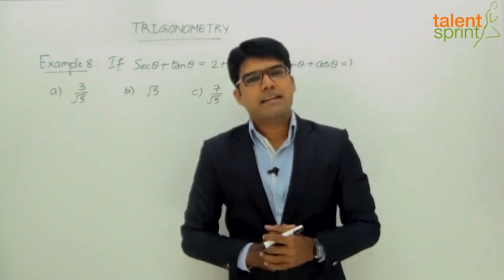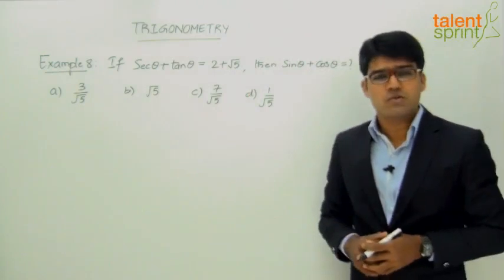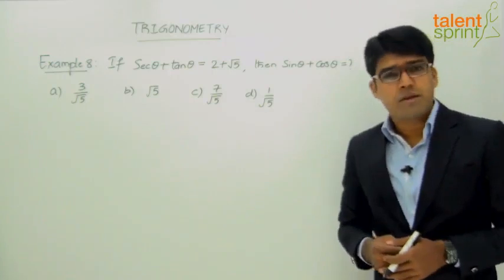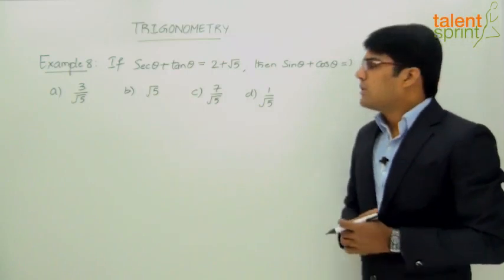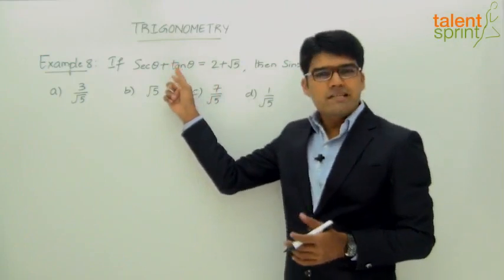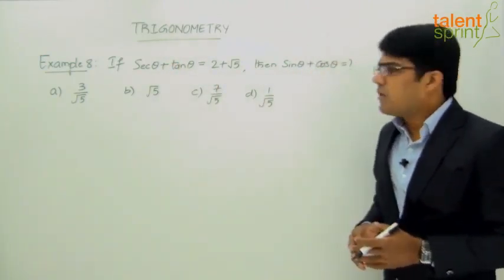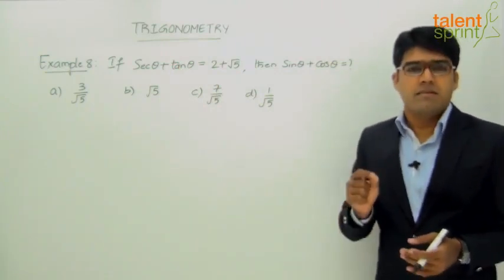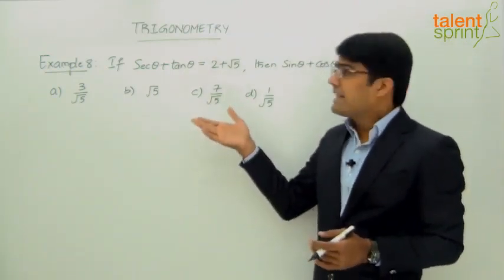Let us now look at example number 8. The question says: if secant theta plus tan theta equals 2 plus root 5, then sine theta plus cos theta equals what? The answer options are 3 by root 5, root 5, 7 by root 5, and 1 by root 5. We have already solved such types of questions where one equation in terms of theta is given and we need to find some expression. There are two ways — either go with random substitution of theta, generally substituting 0, 30, 45, 60, and 90 degrees.